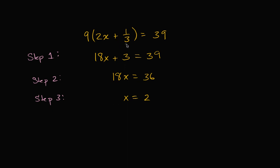All right, let's work through this problem and see if these steps are reasonable. In this first step, they got an 18x here, so it looks like they distributed the 9. Nine times 2x would be 18x. And then you would also have to do 9 times 1/3. Nine times 1/3 would be 9/3, or 3. So that seems reasonable, and you still have a 39 on the right-hand side. So step 1 checks out.